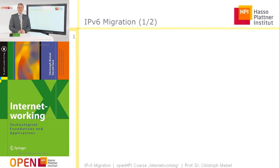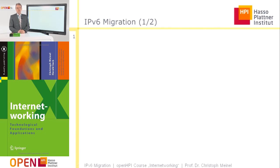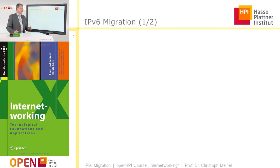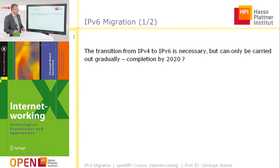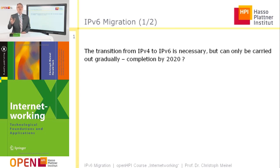In this week we discuss IPv6, the Internet Protocol of the future. Last week we discussed the traditional Internet Protocol, IPv4. The question arises how the transition from IPv4 to IPv6 can be organized. This is a big question because these are two incompatible Internet Protocols — they have different formats in the data header and different address schemes.